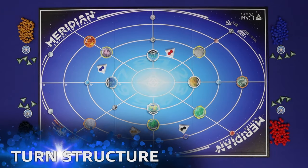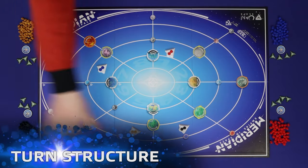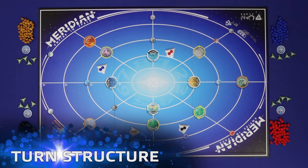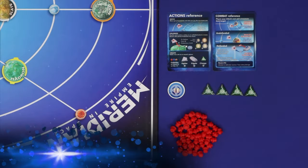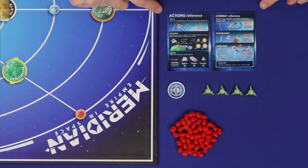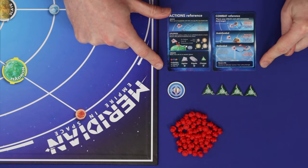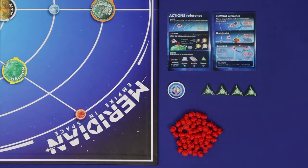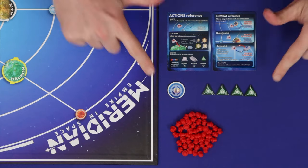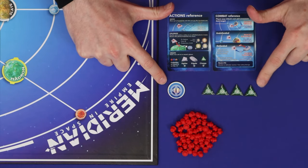Empire in Space is played in turns, going clockwise around the table from the starting player until the end of the game. On a turn, a player may take actions from all of those available on the player aid. A player may take as many actions as they wish to and can afford, because each action costs energy, and the energy cost must be paid using the player's cells and charges.